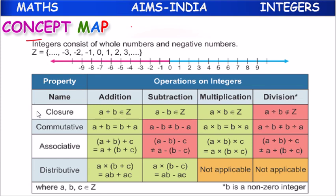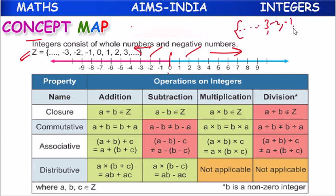About all these properties we have already learned: the set of integers, how to represent them on the number line. In the middle, 0 will be there. On the right-hand side, positive integers will be there, and on the left-hand side, negative integers will be there. The set of integers can be represented in flower braces as: ...minus 3, minus 2, minus 1, 0, 1, 2, 3, and so on. The highest integer we cannot tell — it does not exist. And the lowest integer also does not exist.